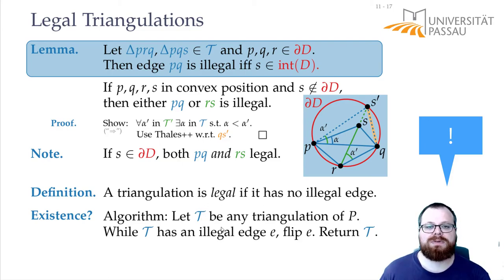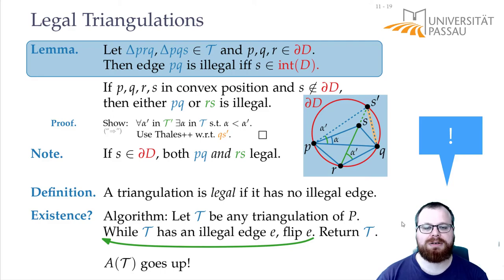Of course, the question is, why does this terminate? Why can we not have an infinite loop, where maybe we keep flipping the same few edges? In every flip, the angle vector goes up. And also, there is a finite number of triangulations in P.